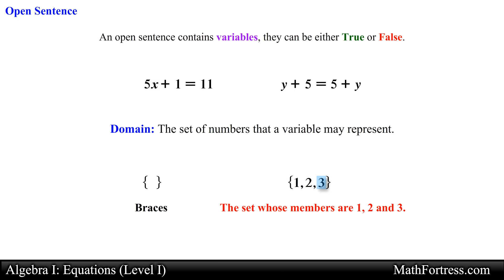Ok, say we have the following equation, 6x minus 1 equals 17 and we are asked to solve this equation over the domain 2, 3, 4, and 5. In other words, the variable x is a set whose members are 2, 3, 4, and 5. The way we mathematically represent the domain is as follows. This expression is read as, x belongs to the set whose members are 2, 3, 4, and 5.